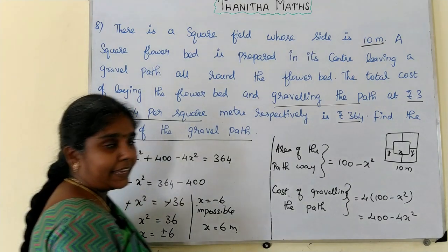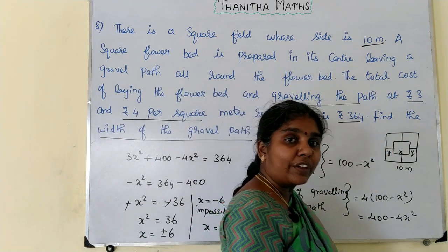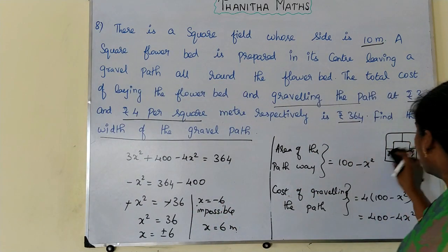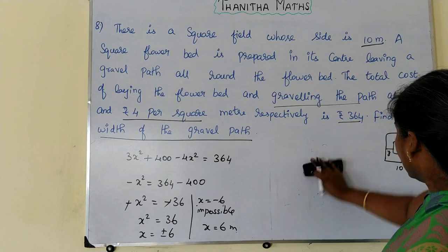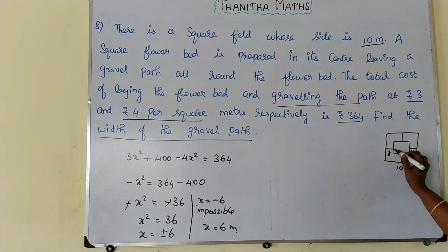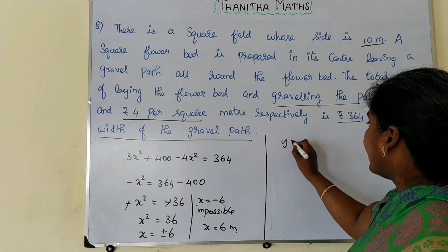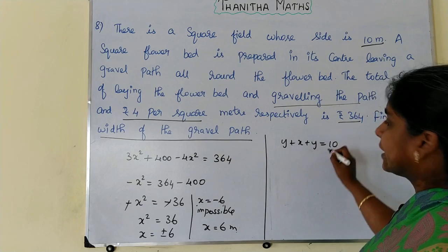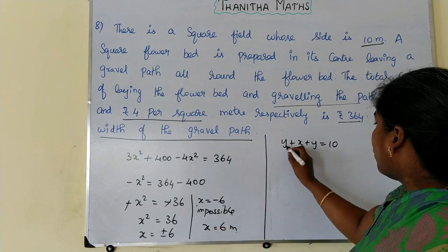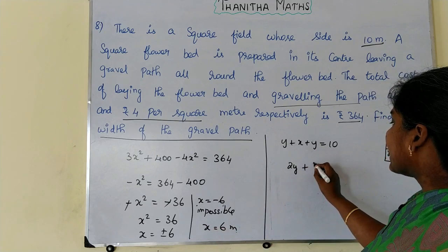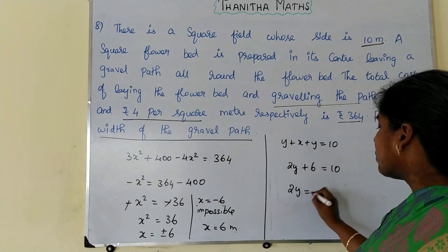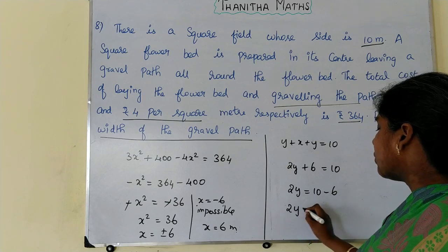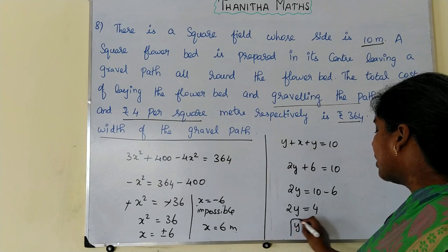The total length of the field side is 10 meters, which equals y plus x plus y. With x equal to 6, we get 2y plus 6 equals 10, so 2y equals 4, and y equals 2 meters.